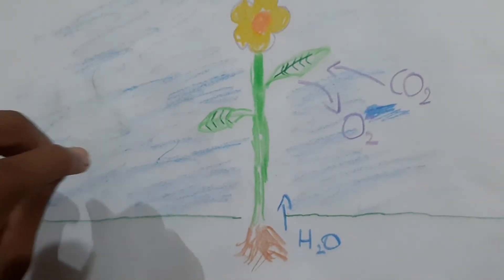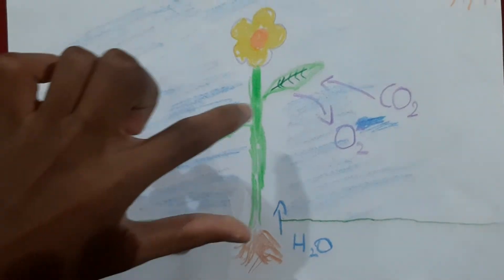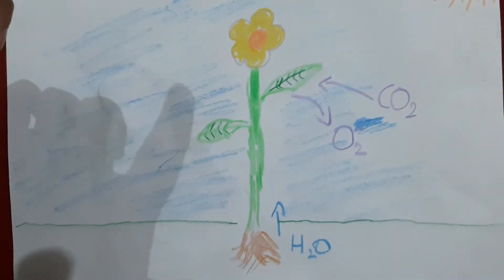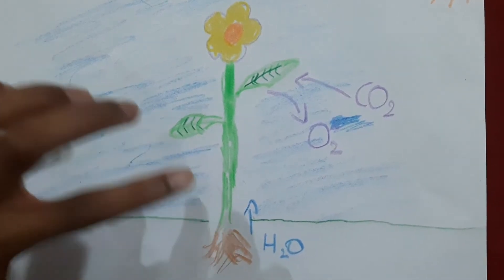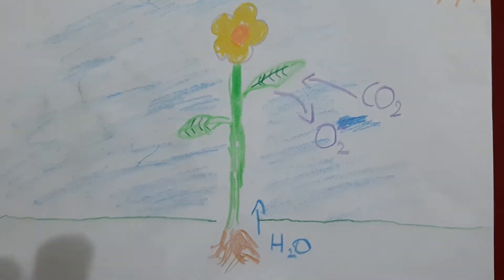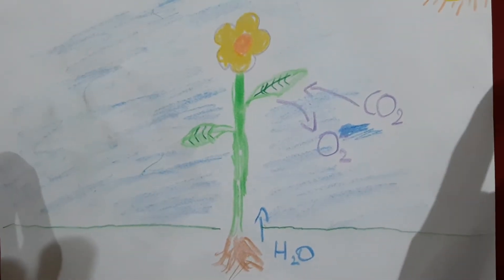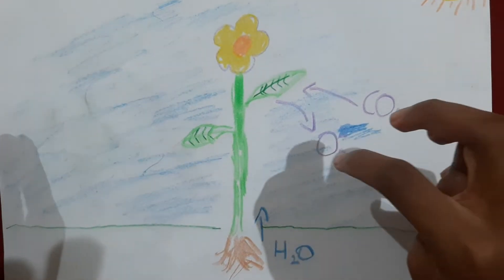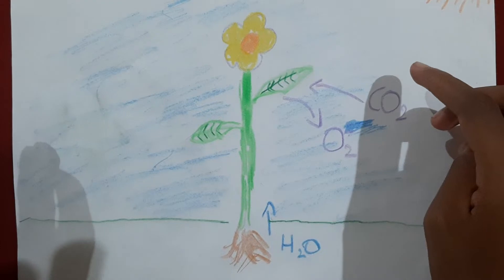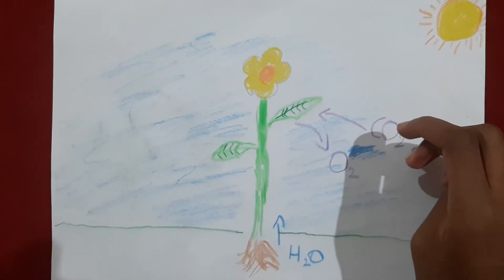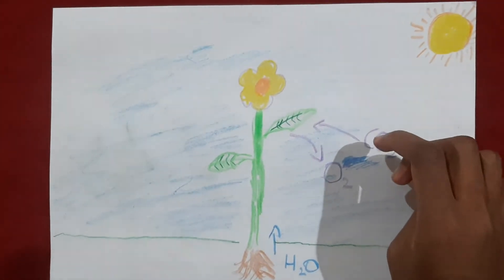happens in detail. Suppose that this is a plant. It's in the ground, and in its environment there's carbon dioxide, oxygen, water, and sunlight. So how a plant